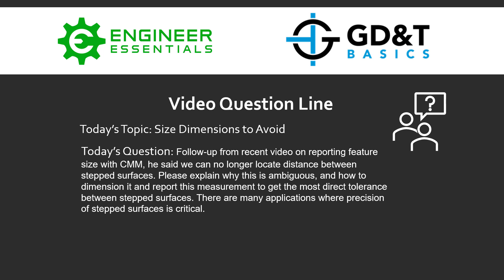The question was: I mentioned in that video that we can no longer locate the distance between stepped surfaces with a size dimension. The question was, please explain why this is ambiguous and how to dimension and report this measurement to get the most direct tolerance between these stepped surfaces — because obviously in the industry there are many applications where the precision between those stepped surfaces is critical. So we're going to take a look at this drawing I have set up to discuss this topic.